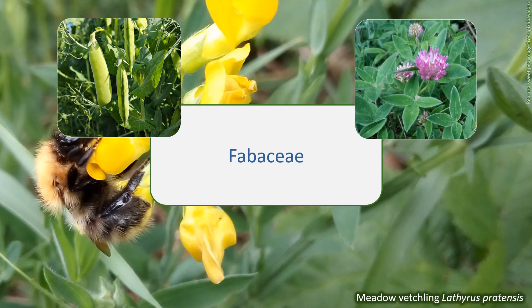Many species have a symbiotic relationship with bacteria that live in nodules on their roots. The bacteria capture nitrogen from the air and change it into a form that plants can use. This means legumes can help to add plant nutrients to soils.